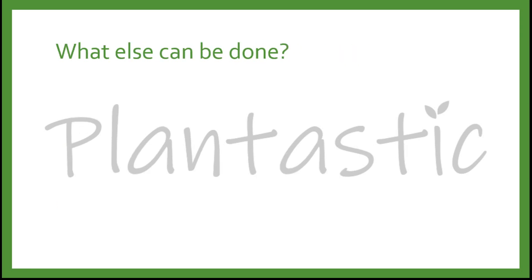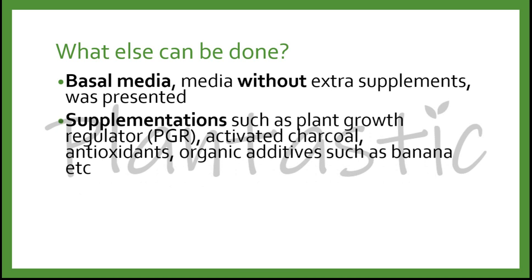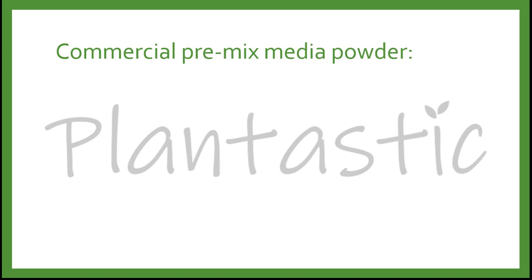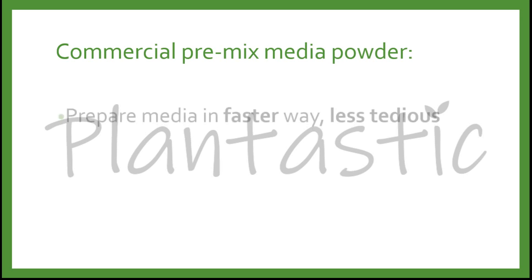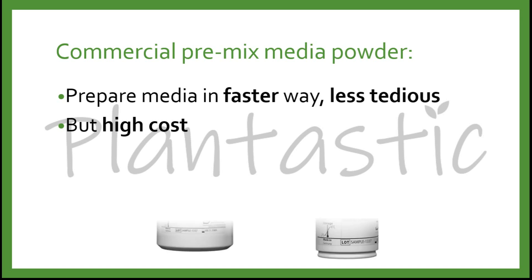The previous steps described the basal media, which is the media without any extra supplements. Supplementations such as plant growth regulators, activated charcoal, antioxidants, and organic additives such as banana or potato can be added into the media. Optimization of the media is needed to maximize output. There is also commercial pre-mixed media powder available, which allows you to prepare media faster and skip stock solution preparation, though the disadvantage is that it is higher cost.